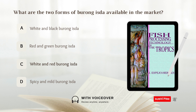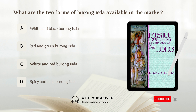C) White and red. Burong isda is available in two forms: white burong isda, which has the natural product color, and red burong isda, which is colored by adding angkak.